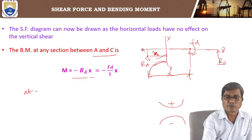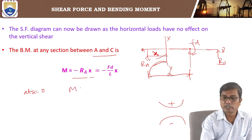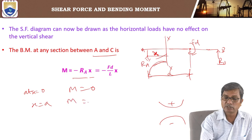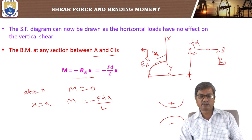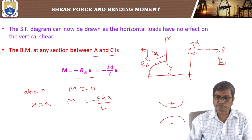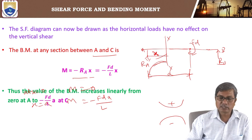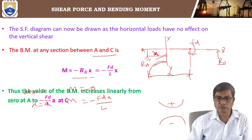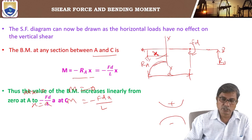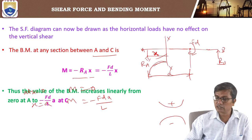At x equal to zero, bending moment is zero. At x equal to a, bending moment is minus Fd by L into a. The values of bending moment increase linearly from 0 at A to minus FdA by L at C.